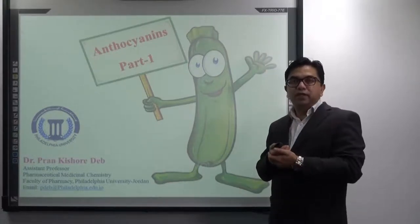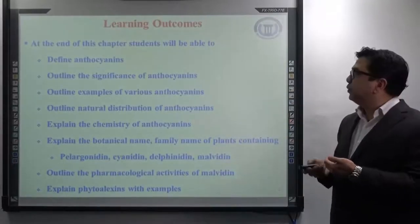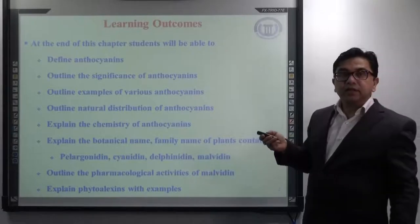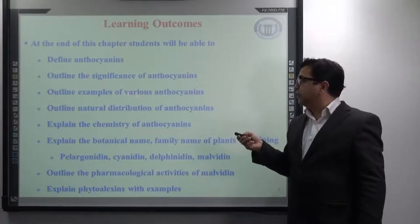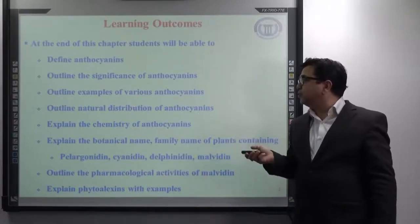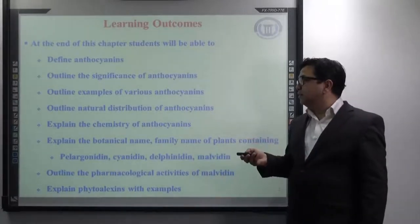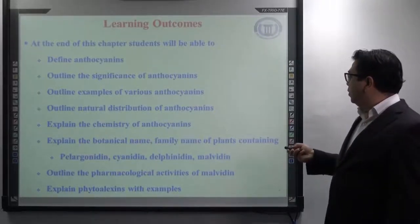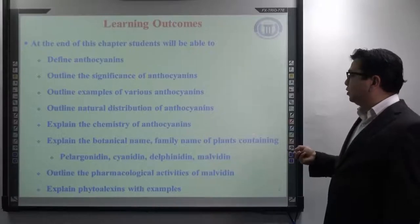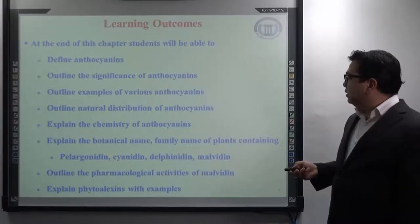Before we start with our lecture, I would like to go through the learning outcomes. At the end of this chapter, you will be able to define anthocyanins, outline the significance of anthocyanins, outline various examples of anthocyanins, natural distribution of anthocyanins, and explain the chemistry of anthocyanins. In part 2, you will also be able to explain the botanical name and family name of plants containing important anthocyanins and anthocyanidines like pelargonidine, cyanidine, delfinidine, and malvidine.